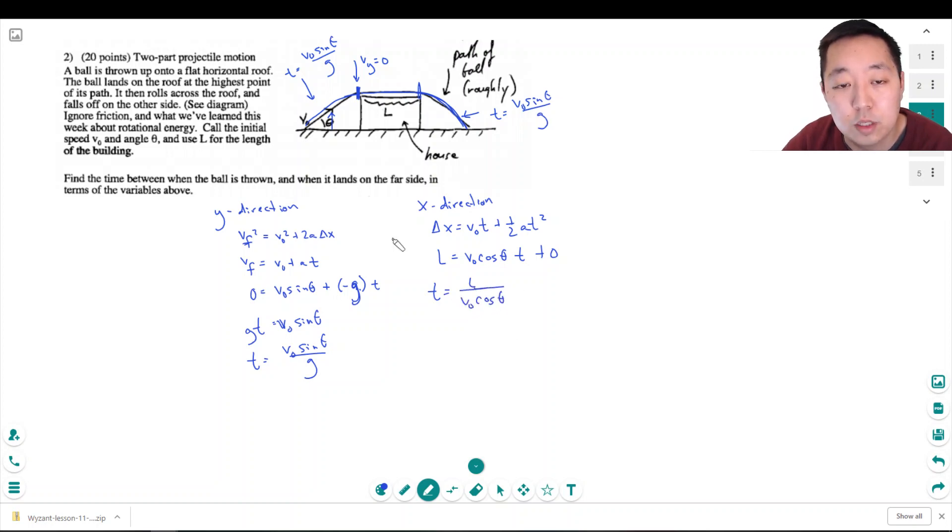So if I sum the three times, I have 2 V0 sin theta over g. That's the rise and the fall time. Plus L over V0 cos theta. And that's it.